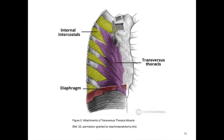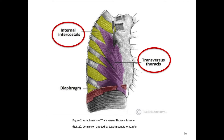This is a view on the inside of the sternum with the attachments of the transverse thoracic muscle. In addition, we can well distinguish the internal intercostal muscles. Transverse thoracic muscle action results in a weak depression of the ribs. The muscle is innervated by the 2nd to the 6th intercostal nerves.